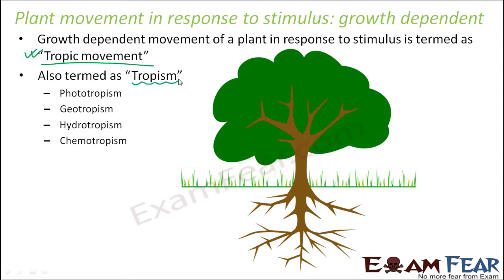Tropism is just another word for tropic movement. When we talk about tropic movements, there are four types: phototropism, geotropism, hydrotropism, and chemotropism. Photo means light, geo means earth, hydro means water, and chemo refers to chemicals. So we will see tropic movements in response to all these different stimuli — light, water, chemicals, and earth all act as stimulus for the plant.